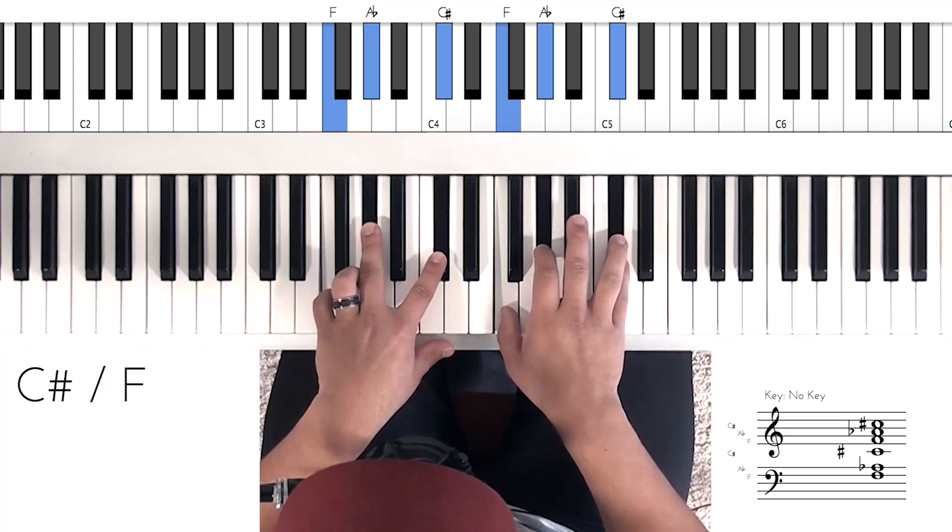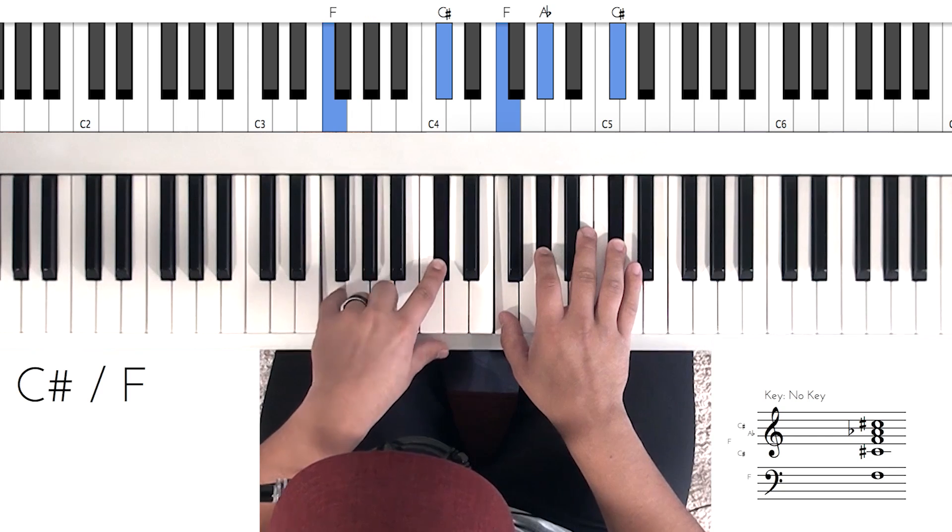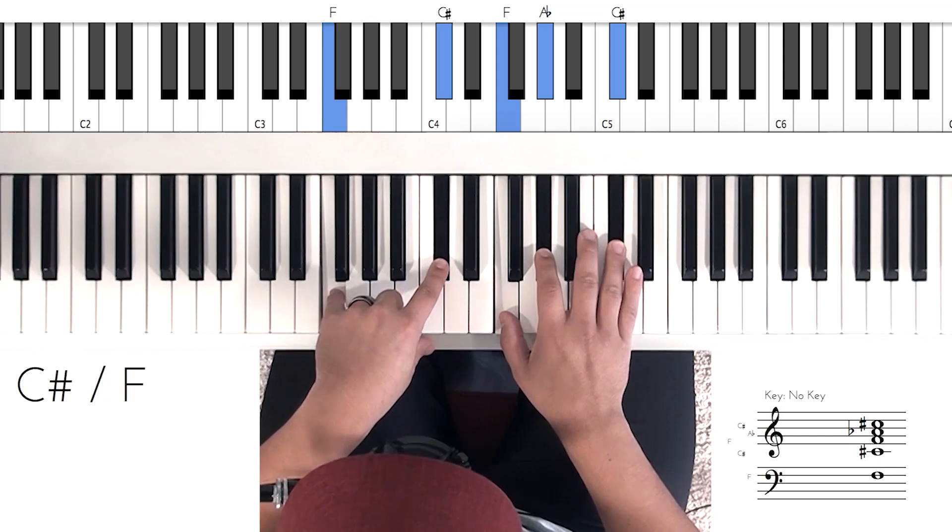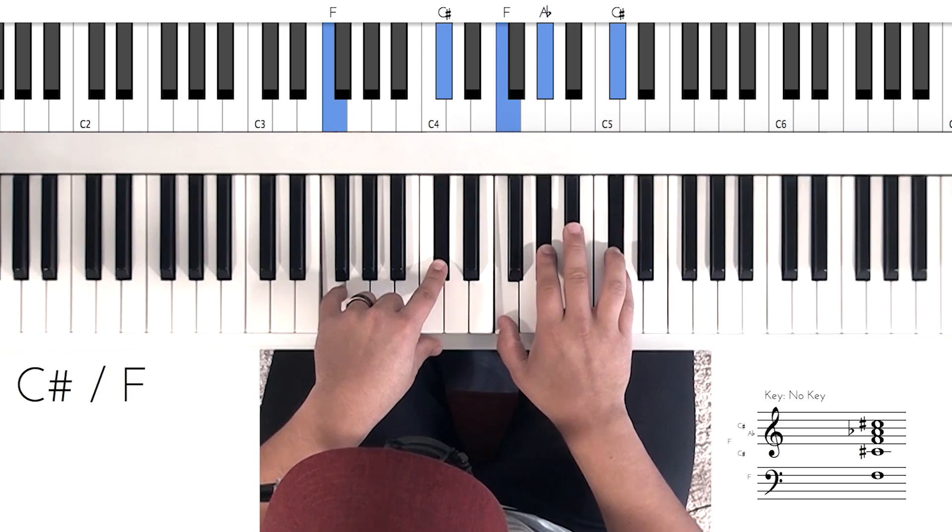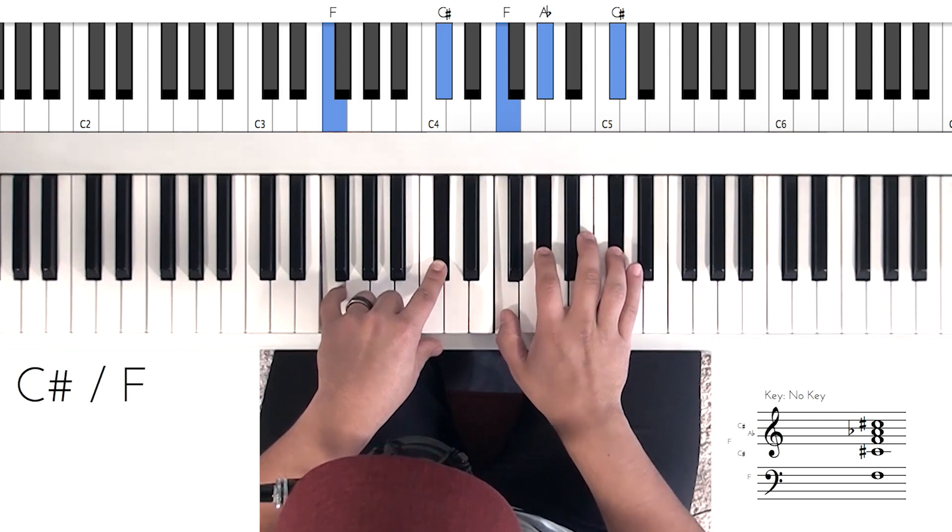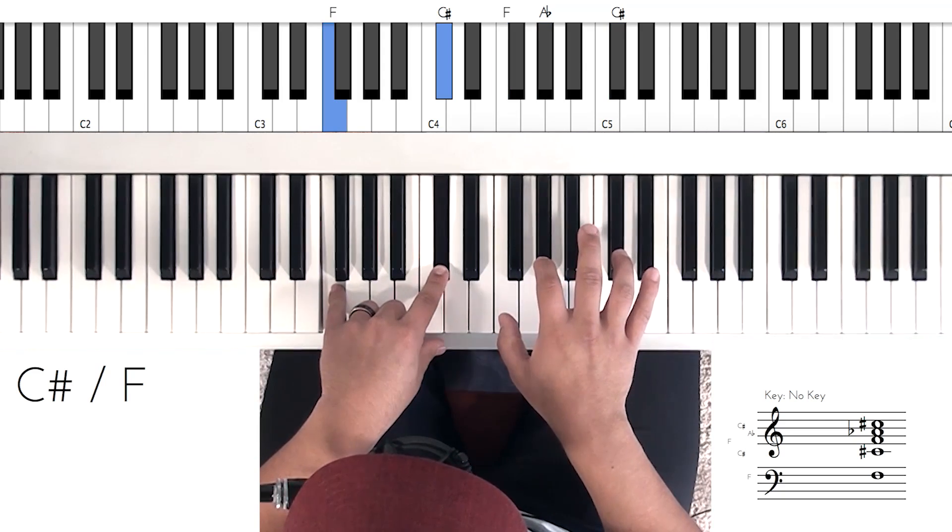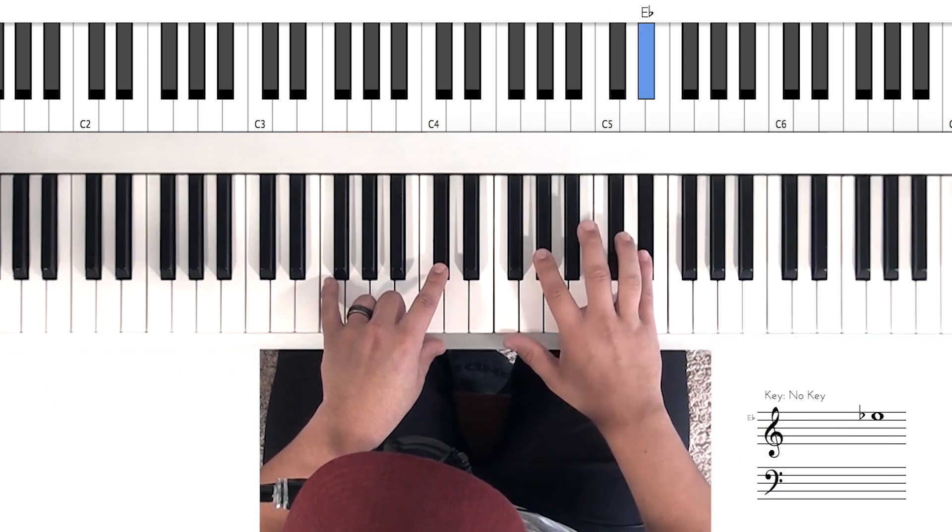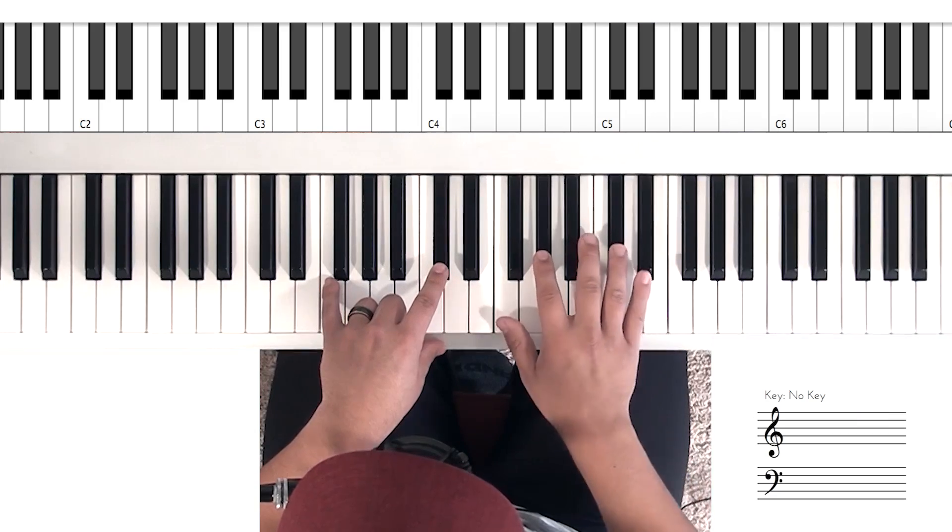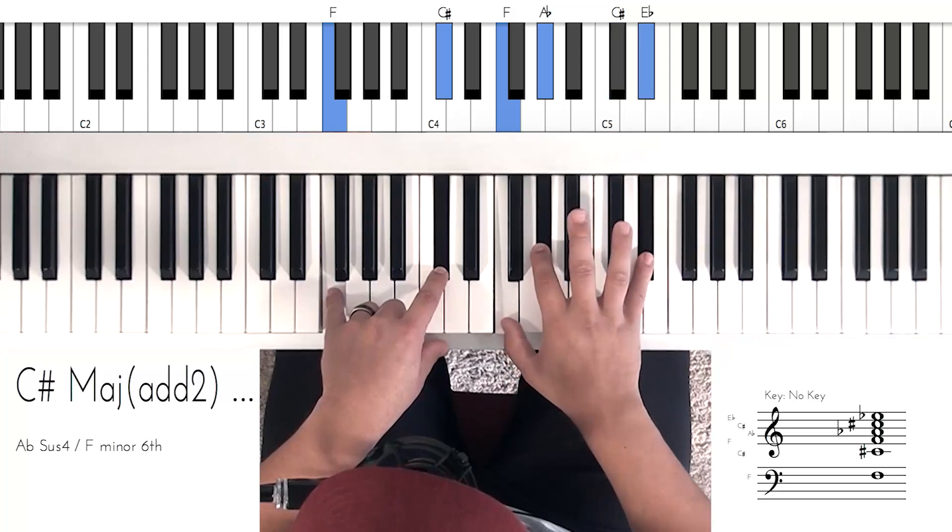Now on this second chord here, the left hand and right hand are going to do the exact same notes except that the left hand is going to omit that middle note. So you're going to have an F and a C sharp here. In the right hand, you're going to have your F, A flat, and C sharp. Hit this together and then the right hand is going to hit a second hit. Notice my four finger is on the C sharp and my five finger is on the E flat. So I'm going to go from the four to the five on the second hit, and then you'll move on to the next chord.